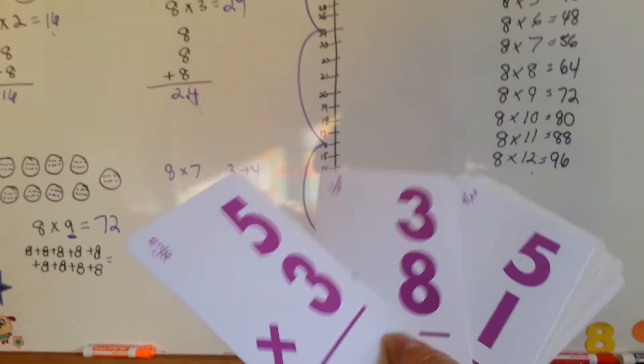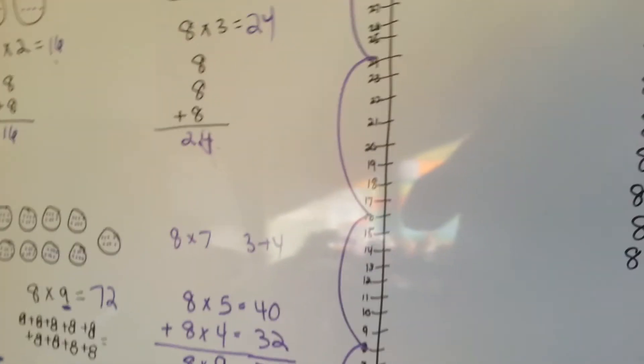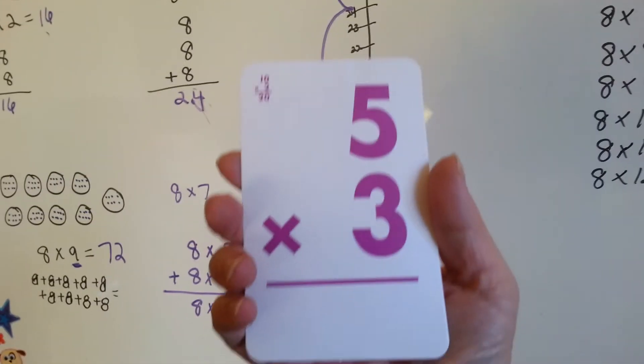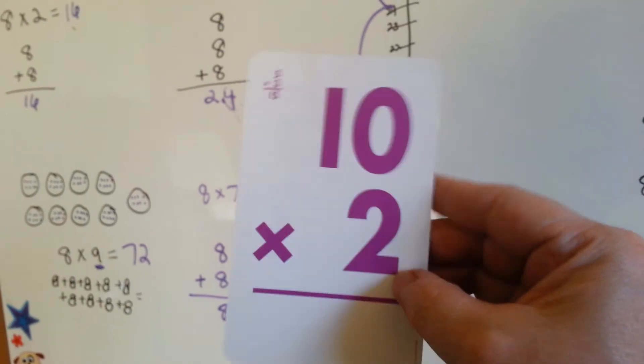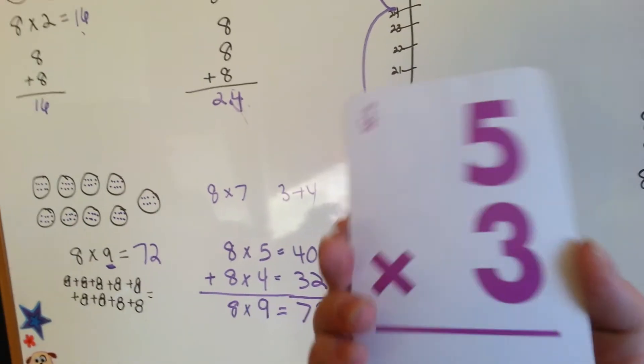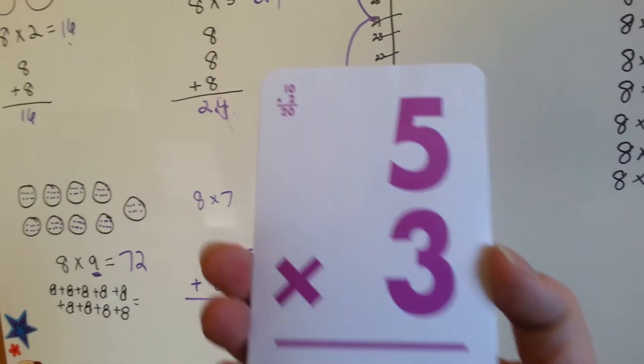See, these even have answers on them. When you turn it over, like this one, five times three, see how it's got the answer in the corner? And then on this side it says ten times two, and it's got the answer in that corner.